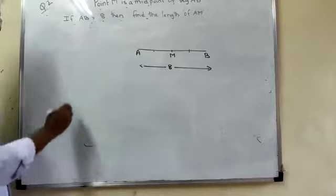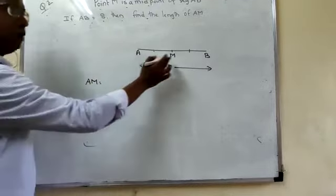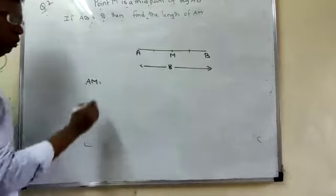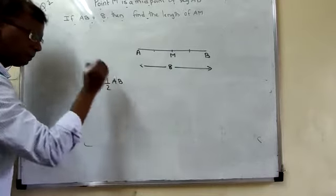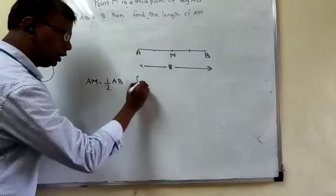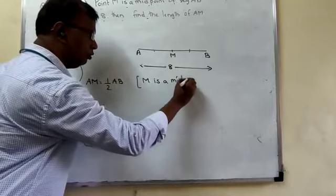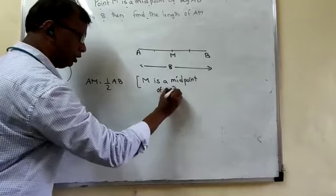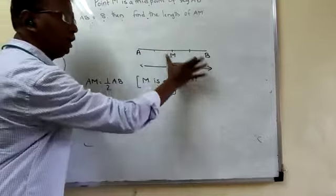There are two ways of doing the sum. First way we can do that AM is, because M is a midpoint of AB, we can say AM is half of AB. What is AB given for you? In bracket you have to write M is a midpoint of AB. Because M is a midpoint of AB, AM will be half of AB.